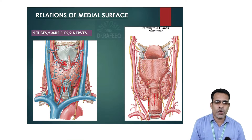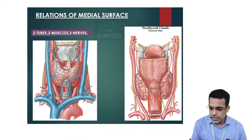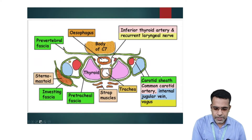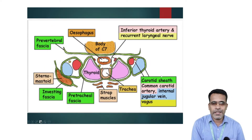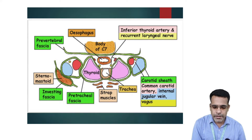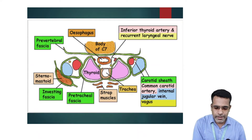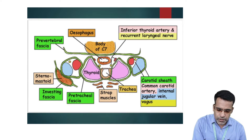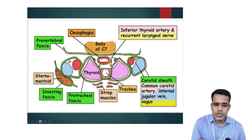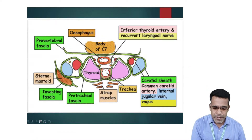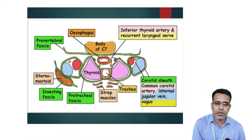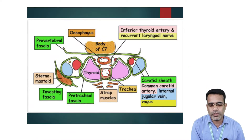The two cartilages related to the medial surface are the thyroid cartilage and the cricoid cartilage. These are the relations of the medial surface of the thyroid lobes, and a cross-section diagram at the level of the thyroid gland clearly illustrates all these relations — two tubes, two nerves, two muscles, and two cartilages.